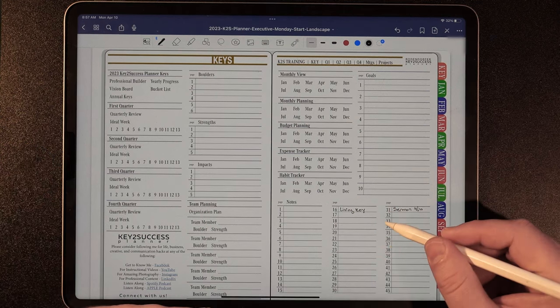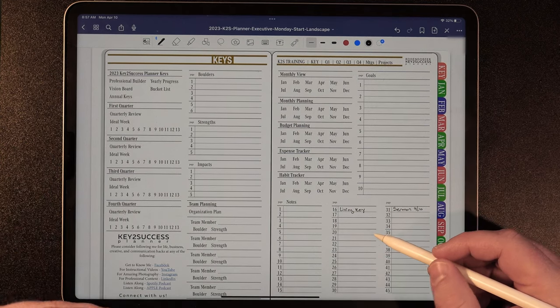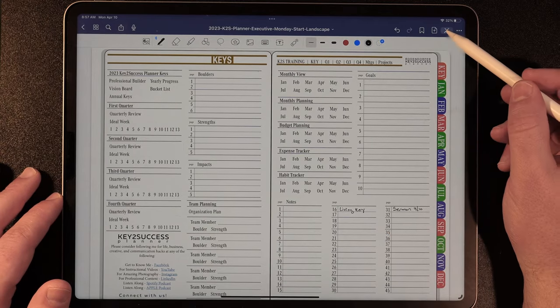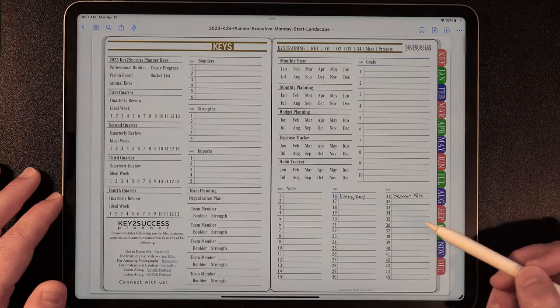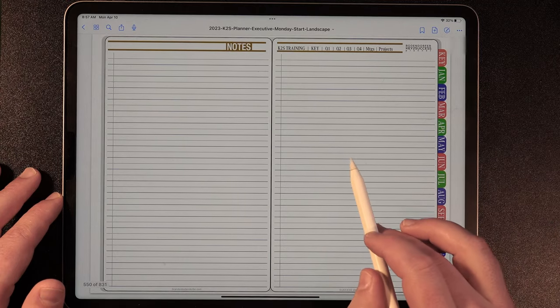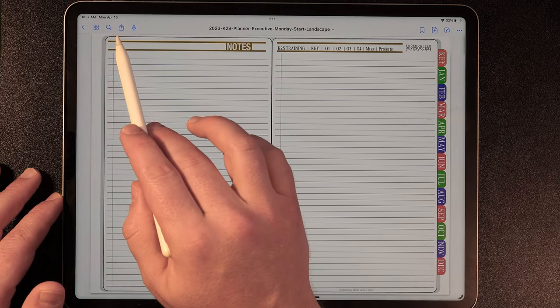And I'm doing this because we have hyperlinks in the planner that you can be able to create a link or establish a note section that relates to this balance wheel. So I'm going to go ahead and turn that off. Go back to reading mode and tap on the 16 here.